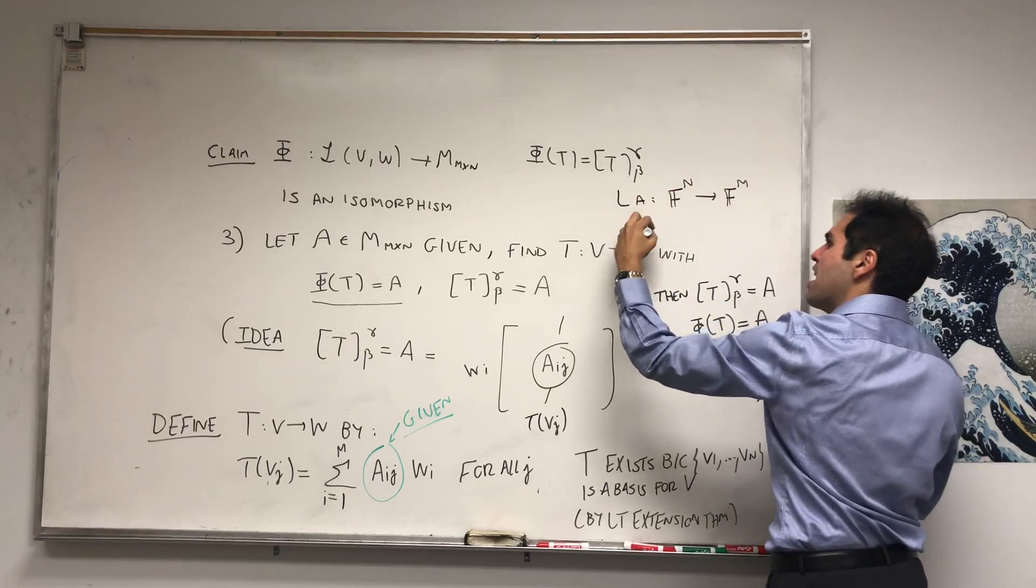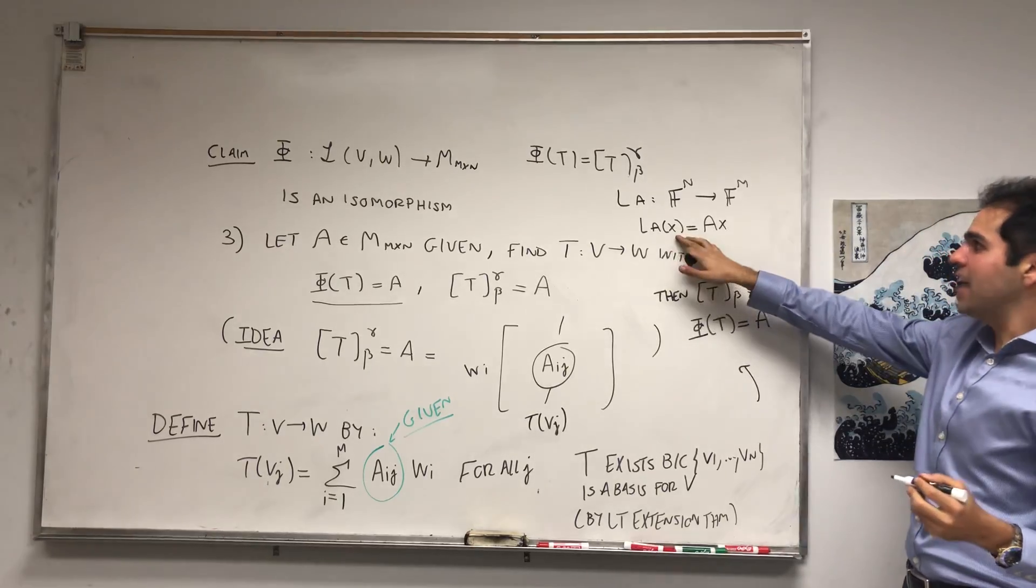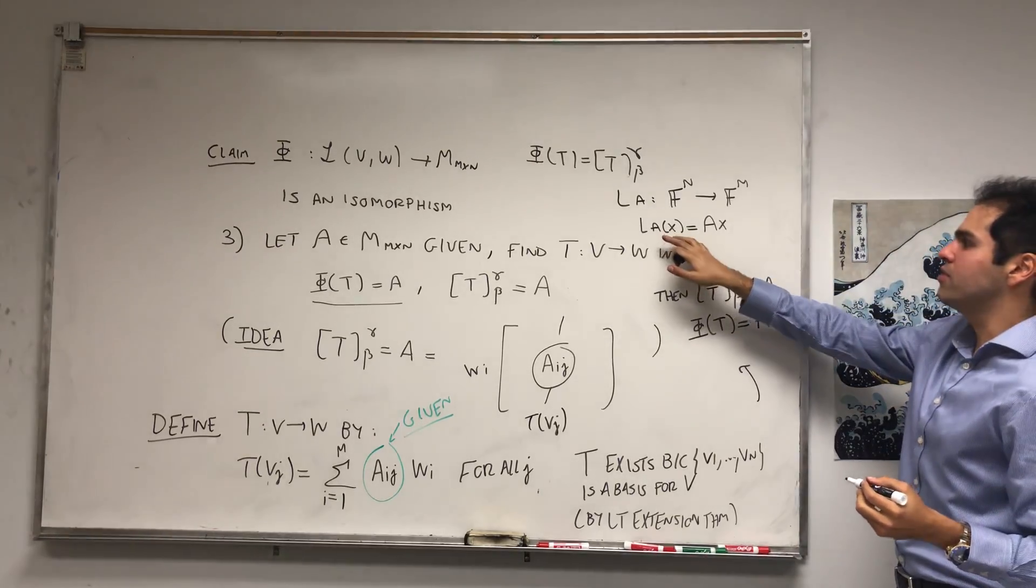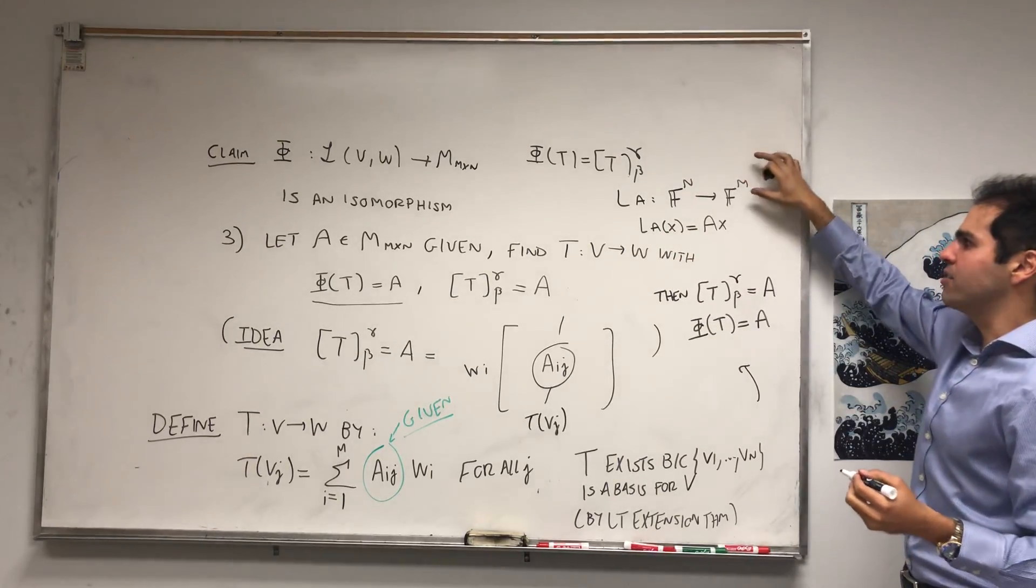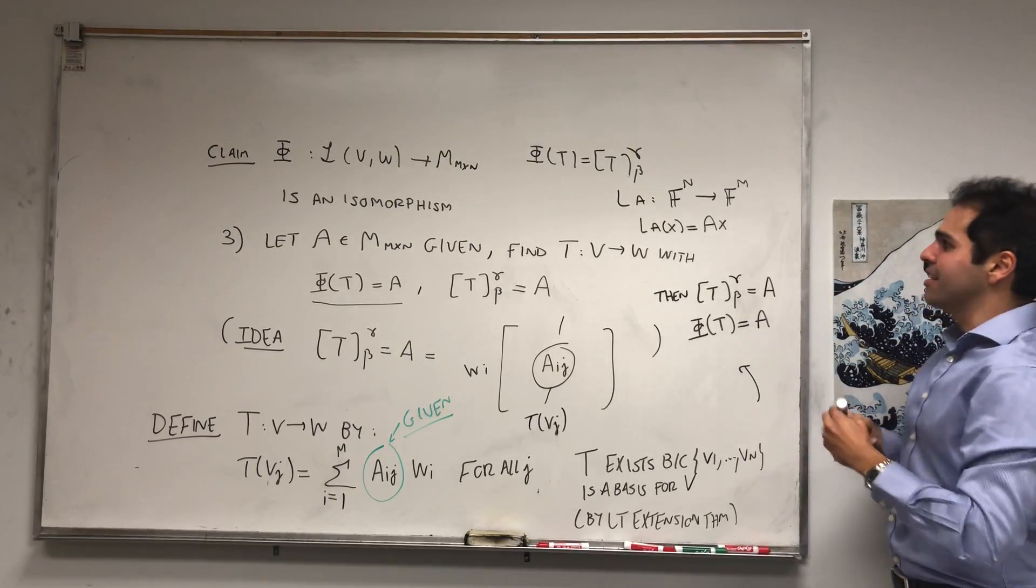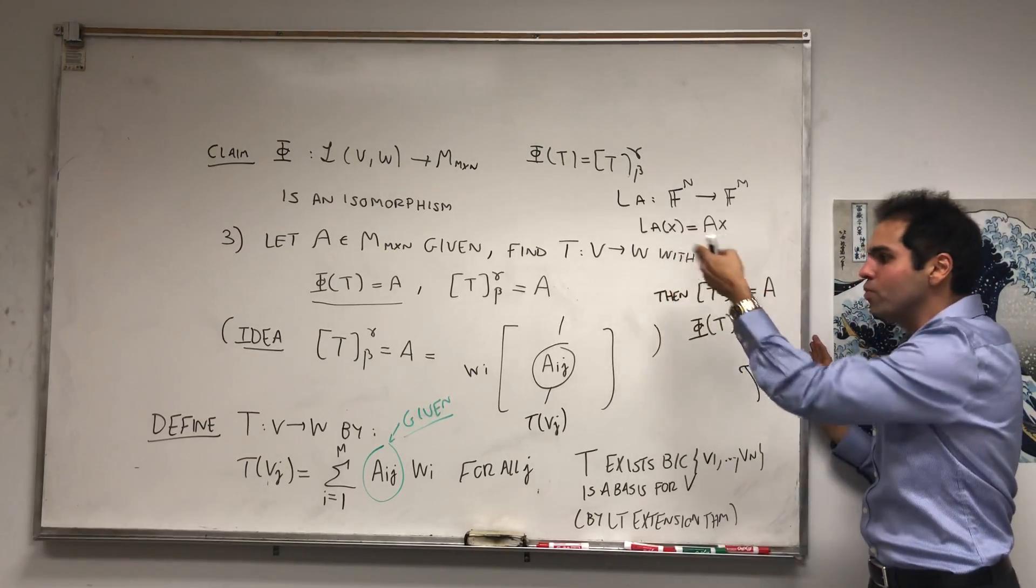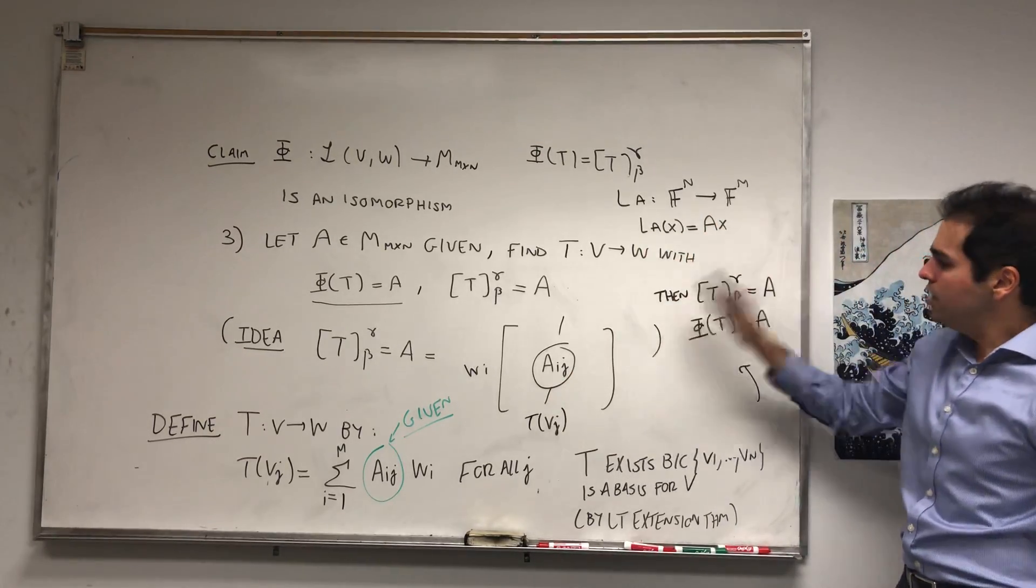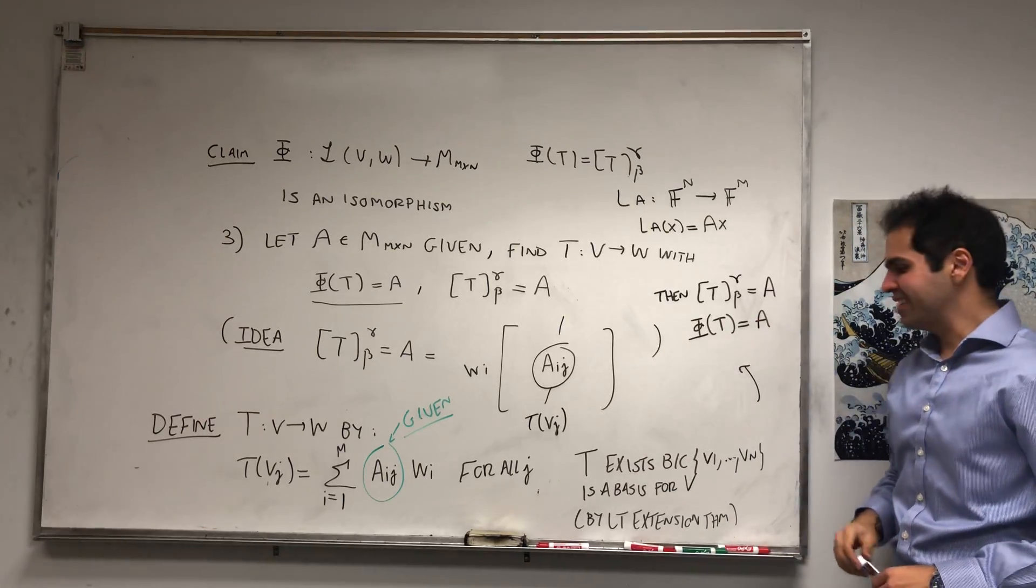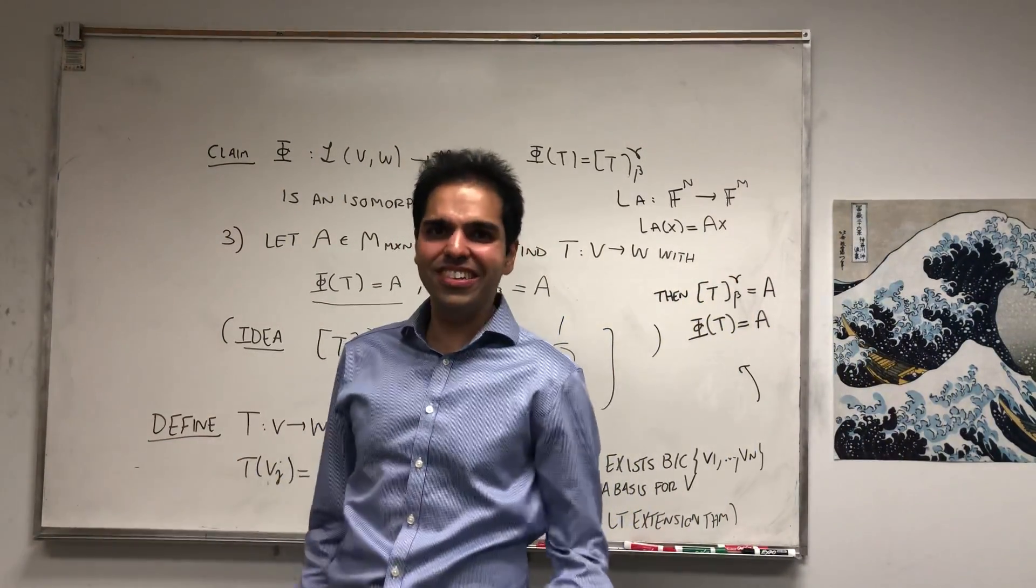So L_A, in case you don't know it, is a linear transformation from F^N to F^M where L_A(x) is simply Ax. And one of the nice things is the matrix of L_A with respect to the standard bases is precisely A, but that would work but just in that case. In general, you would have to do an analog, which is just a linear transformation whose matrix is A.